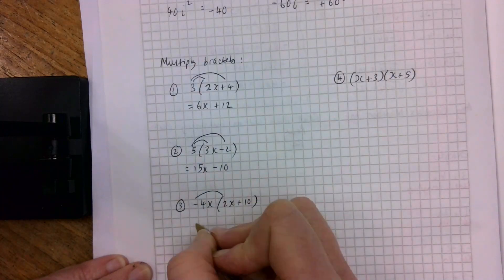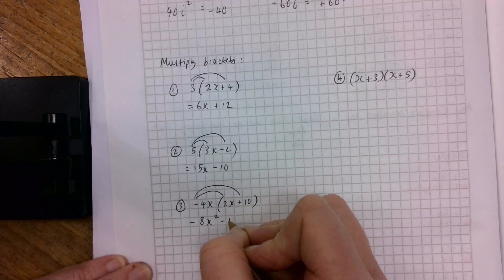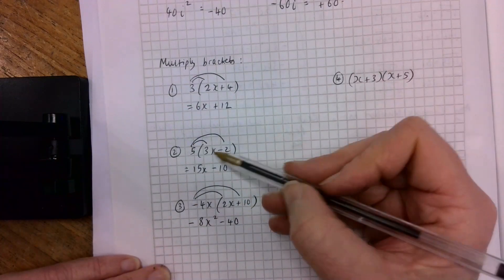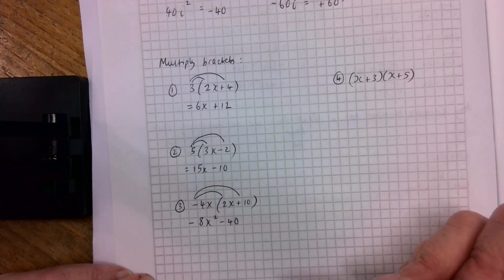Minus 4x by 2x would be minus 8x squared, and minus 4 by 10 would be minus 40. So those hopefully are straightforward enough. Something's outside the bracket, you just multiply it by what's inside the bracket, and just be careful with the powers.